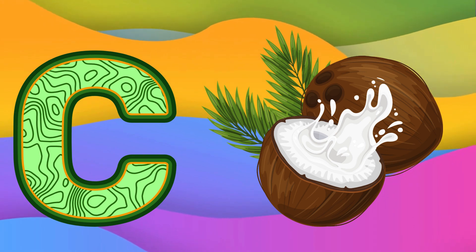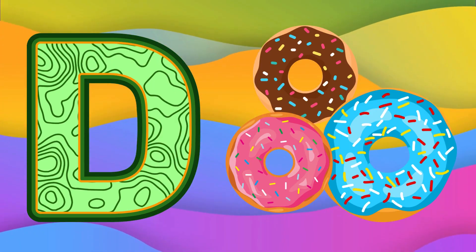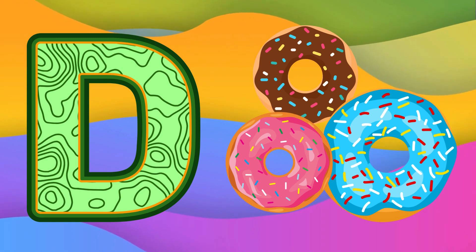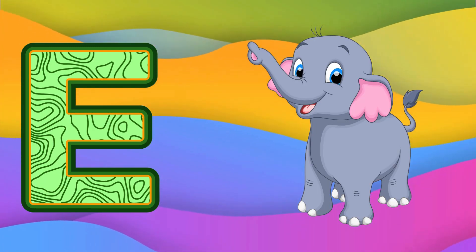C is for Coconut. Ka, Ka. Coconut. D is for Donut. Da, Da. Donut.